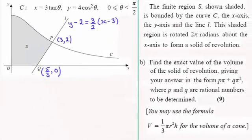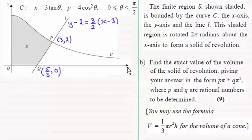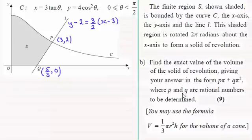For this part of the question, we're told that area S shaded here is bounded by the curve C, the y-axis, the x-axis, and the line L. What we've got to do is rotate this through 2π radians about the x-axis and find the volume of revolution in the form pπ + qπ², where p and q are rational numbers to be determined.